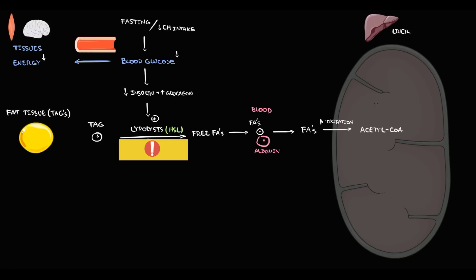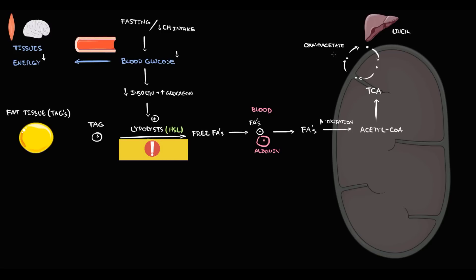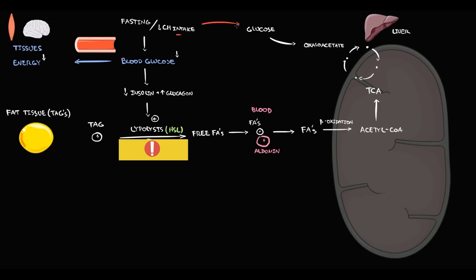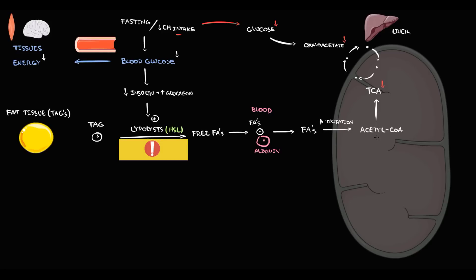Beta oxidation of fatty acids results in production of large quantities of acetyl-CoA. Most acetyl-CoA molecules then enter the Krebs cycle. Importantly, the activity of the Krebs cycle depends on the amount of its intermediate metabolites, one of which is oxaloacetate. The amount of oxaloacetate is proportionate to the amount of glucose in the tissue. During fasting, glucose level decreases, which causes a decrease in oxaloacetate level, impairing the Krebs cycle. The liver cannot use all of the accumulating acetyl-CoA molecules and must find an alternative pathway.